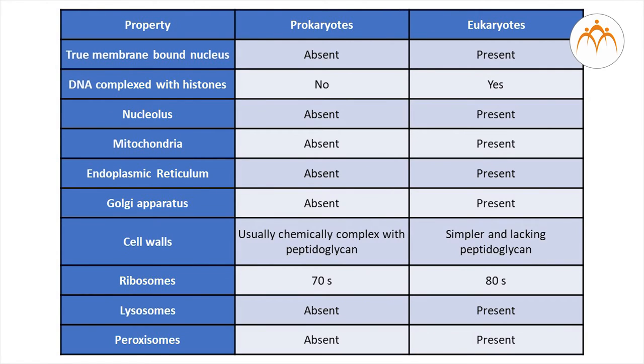Mitochondria is absent in prokaryotes, present in eukaryotes. Endoplasmic reticulum is absent in prokaryotes but it is present in eukaryotes. Golgi apparatus is absent in prokaryotes but it is present in eukaryotes.